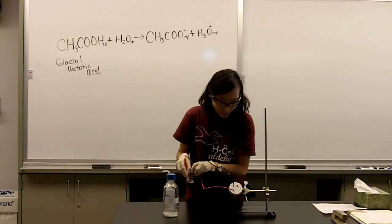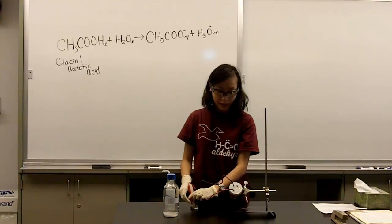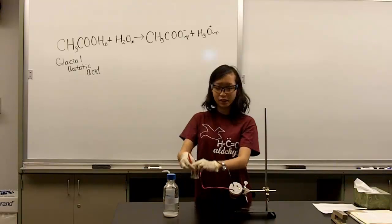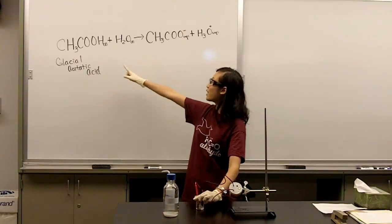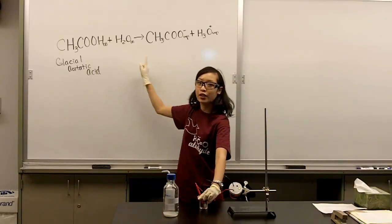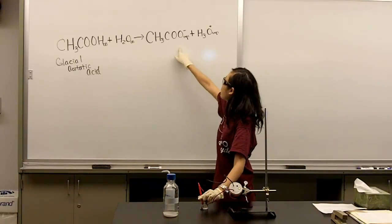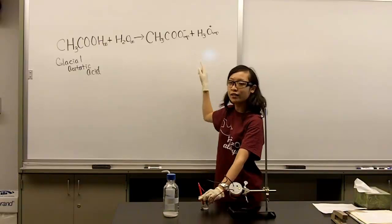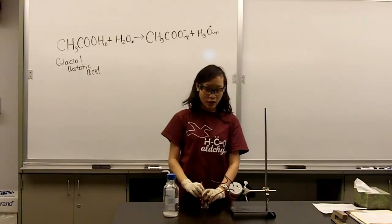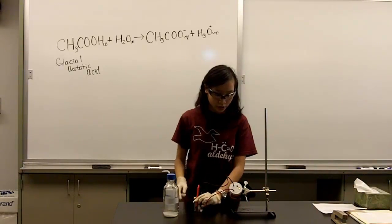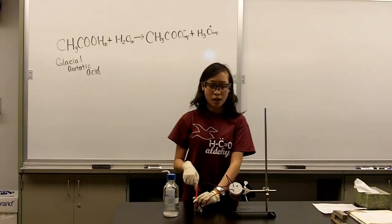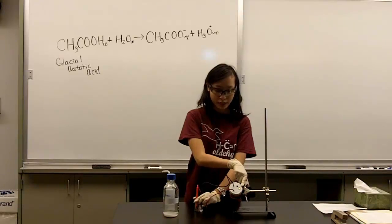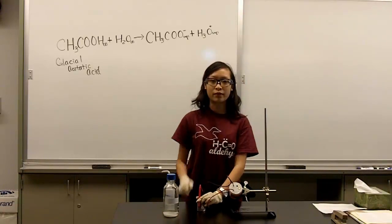What actually happens when acetic acid and water are mixed together is they become ionized into ions. The ions help carry the electricity and complete the circuit, which makes this little light bulb light up.